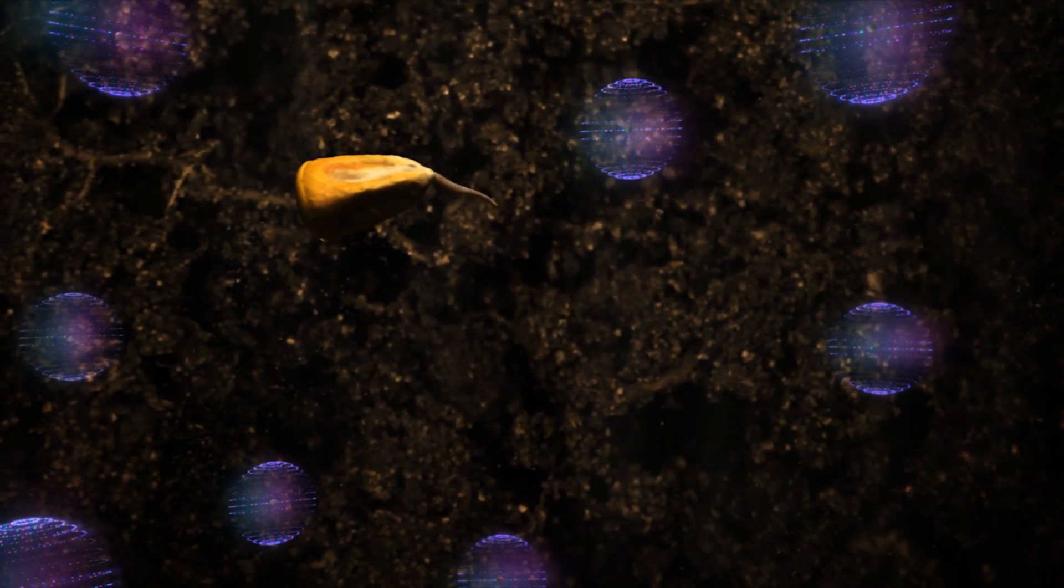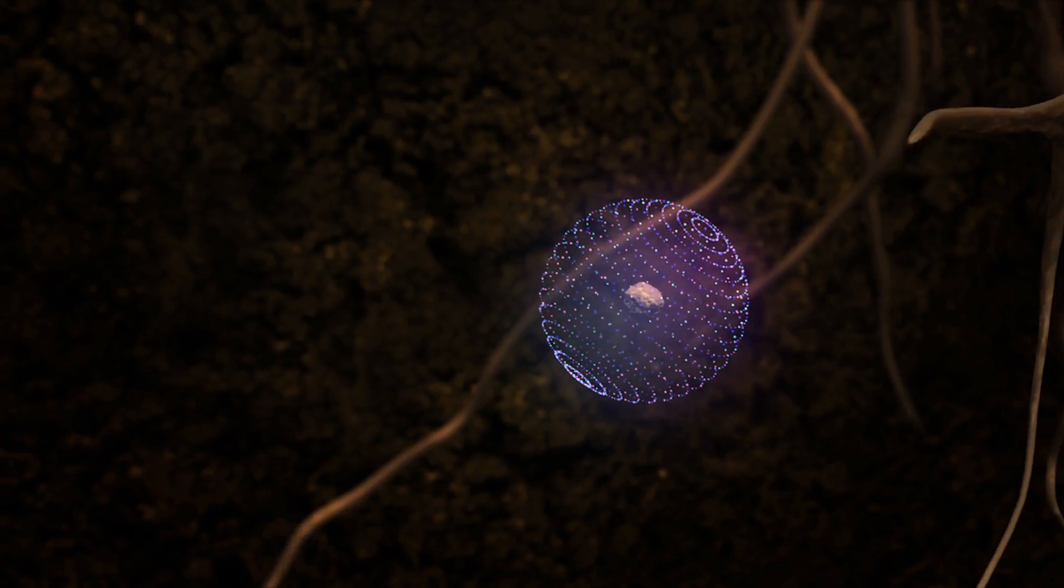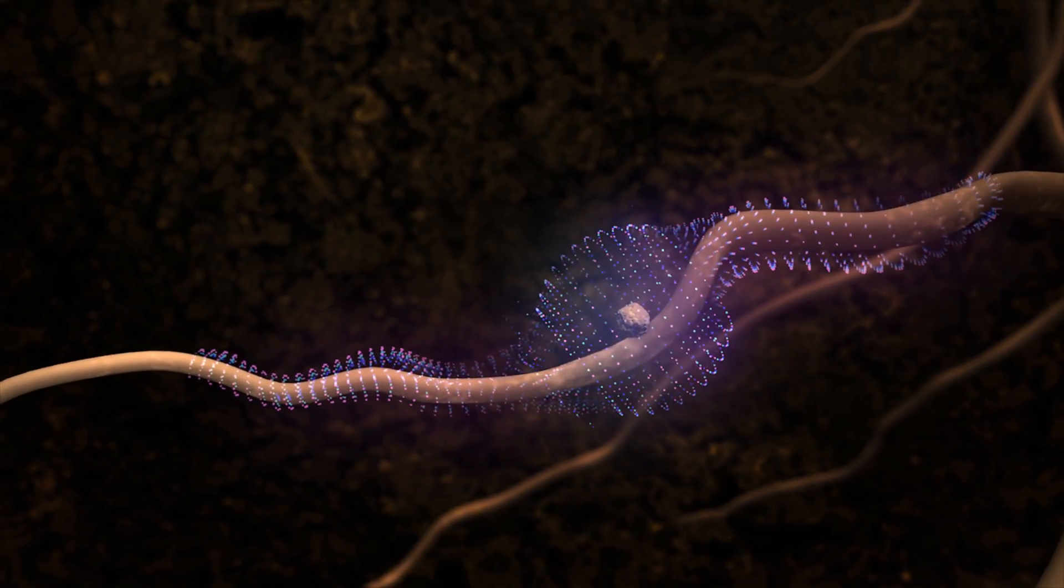But because each MicroEssentials granule is nutritionally balanced, uniform distribution is easily achieved. Plant roots have more sites to reach the key nutrients needed for optimal growth.